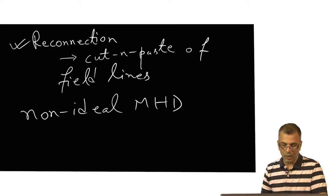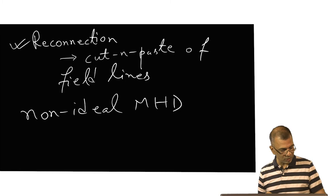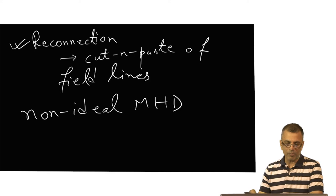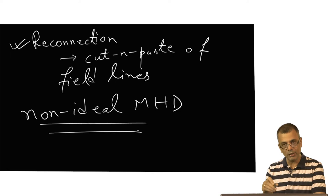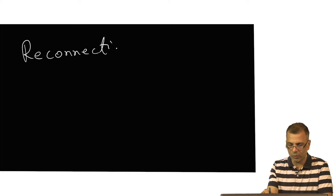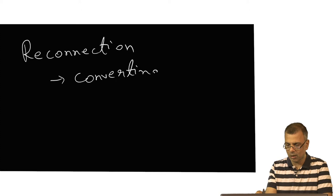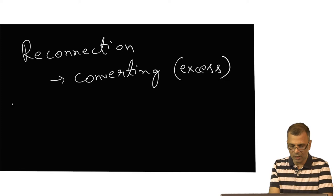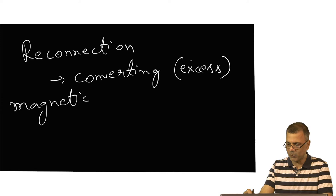You might ask why — I thought we were discussing ideal MHD, and the whole point was that ideal MHD is good for certain things. I just want you to keep this in mind for the time being and I will tell you exactly how reconnection violates ideal MHD. But the thing is, reconnection is a very important phenomenon from the point of view of converting magnetic energy — converting, I might even say, excess magnetic energy.